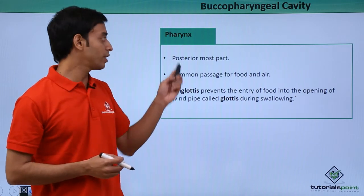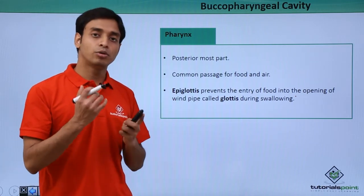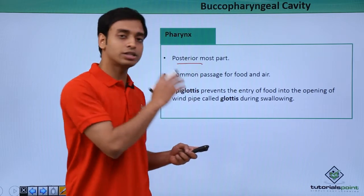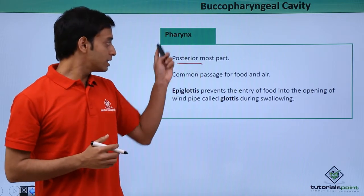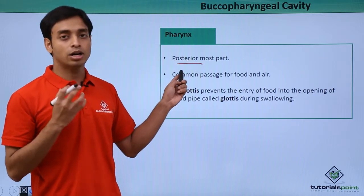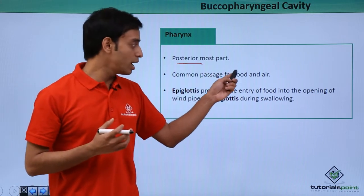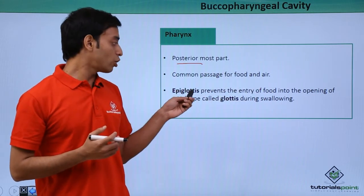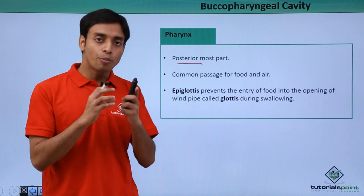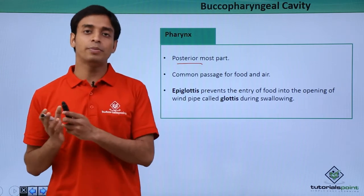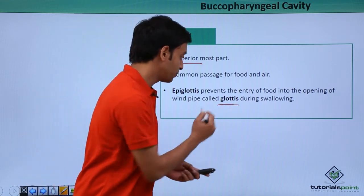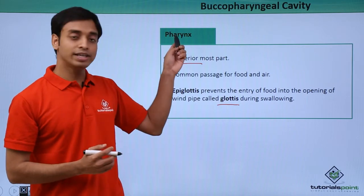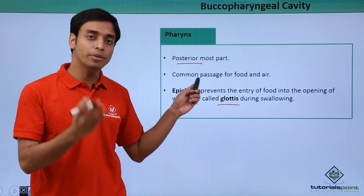After the buccal cavity, the next structure of the buccopharyngeal cavity is known as the pharynx. This is the posteriormost portion, present towards the back, and it is basically a common passage for both food and air. The opening of the windpipe is known as the glottis.